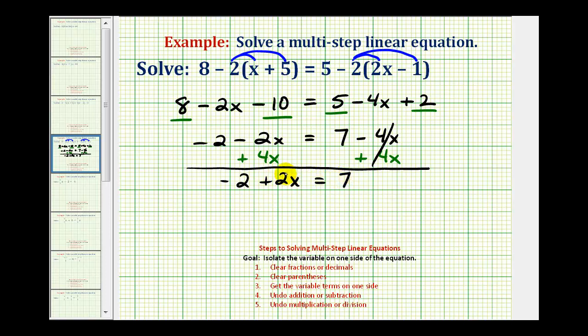And now, to isolate the variable term, to undo negative two, we're going to add two to both sides of the equation. This is zero, so we have two x equals seven plus two is nine.